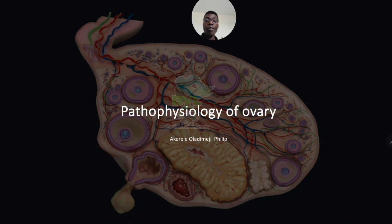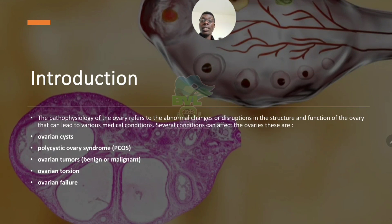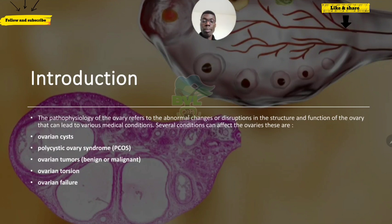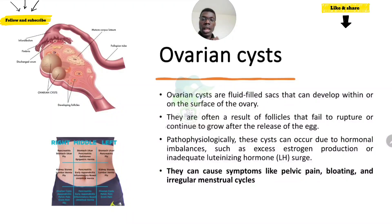Now, what are the pathophysiologies of the ovary — that means what are the conditions that can go wrong? There are a lot of conditions associated with the ovary, but the ones that are very common and prevalent are ovarian cysts, polycystic ovarian syndrome (commonly called PCOS), ovarian tumors — which can be malignant or benign — ovarian torsion, and ovarian failure.